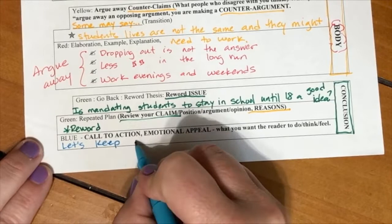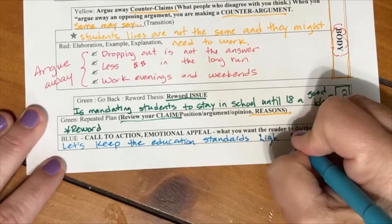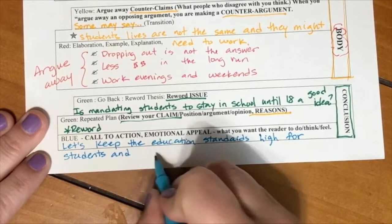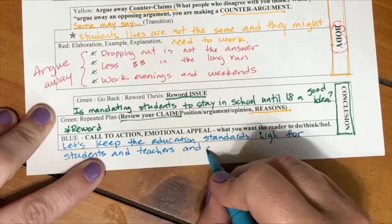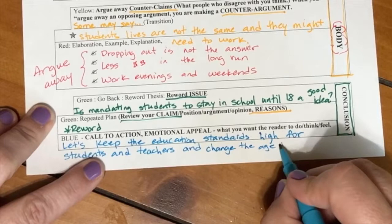The final big thing, the blue of the conclusion is what's called a call to action or emotional appeal. In an argumentative essay, oftentimes we're trying to get people to feel something, to do something, to think something. We want to see if we can get a sentence or two to really bring that out. For example, in this one, we might say something like, let's keep the education standards high for all students and teachers and change the age to stay in school until 18. That's the final thing that we want to make sure we include in argumentative essays, a call to action. And I hope this helps.